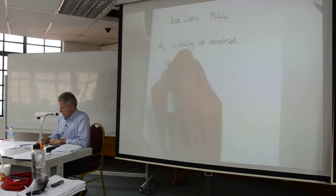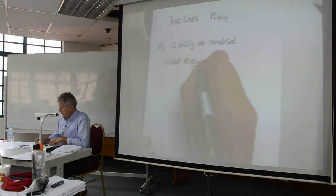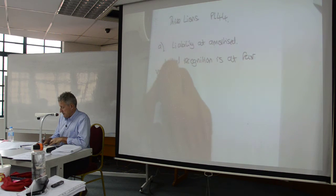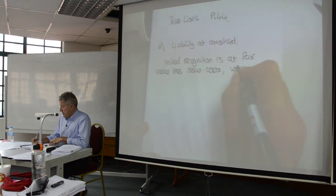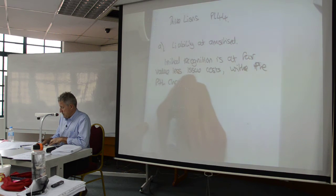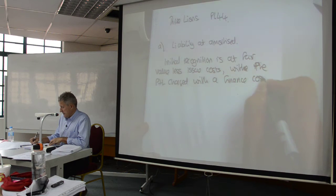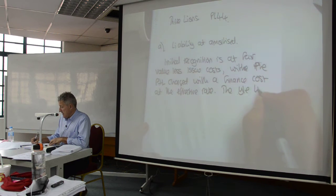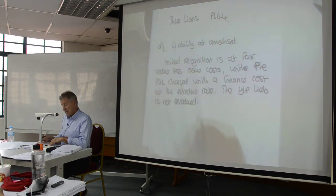For a liability at amortised cost: initial recognition is at fair value, less issue costs, with the P&L charged with a finance cost at the effective rate. The year-end liability is not revalued.